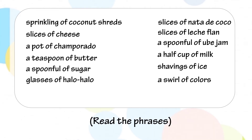Now, let us read these phrases all together: sprinkling of coconut shred, slices of cheese, a pot of champorado, a teaspoon of butter, a spoonful of sugar, glasses of halo-halo, slices of nata de coco, slices of leche flan, a spoonful of ruby jam, a half cup of milk, shavings of ice, a swirl of colors.